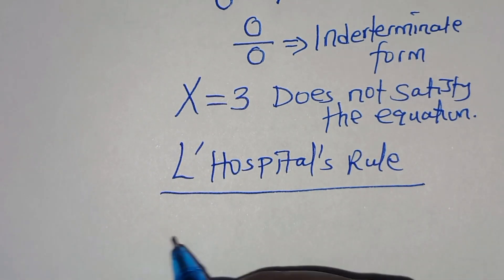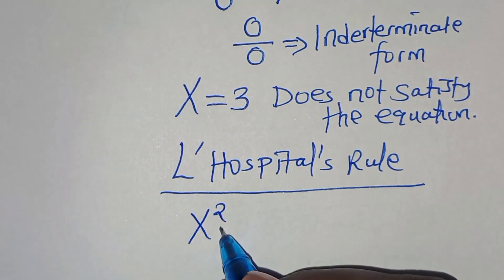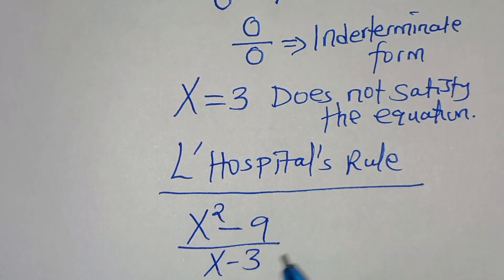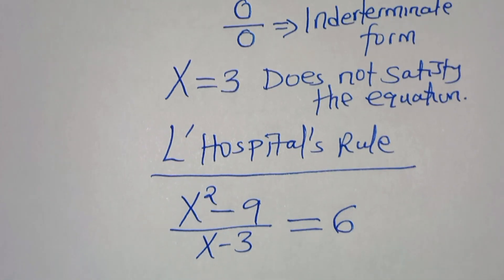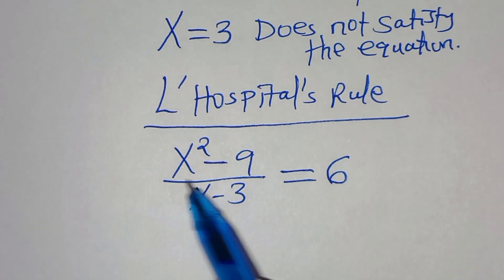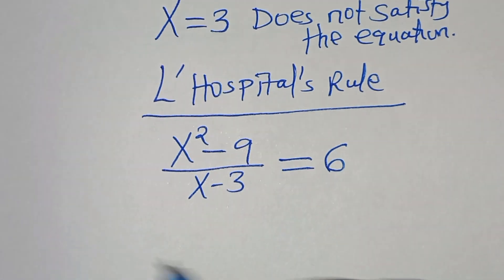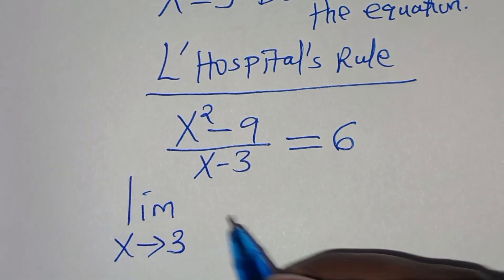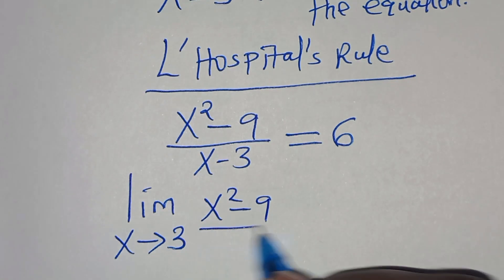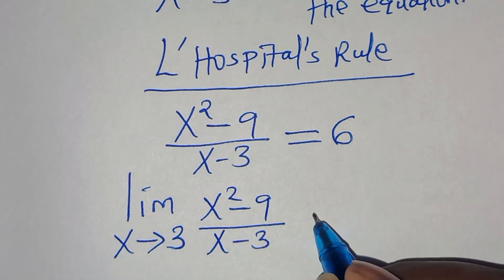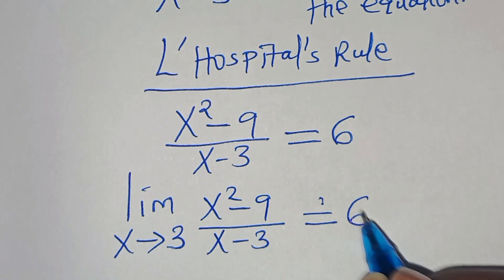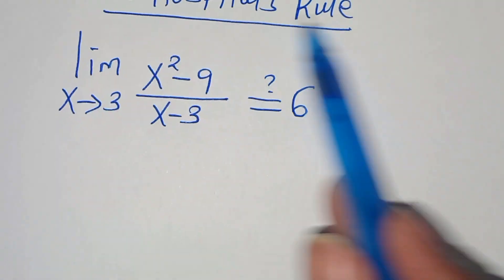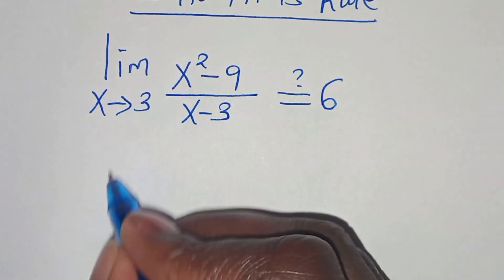So we have x squared minus 9 divided by x minus 3, equal to 6. Applying L'Hôpital's rule, this is the limit as x tends to 3 of x squared minus 9 divided by x minus 3, and this is supposed to give us a value of 6.